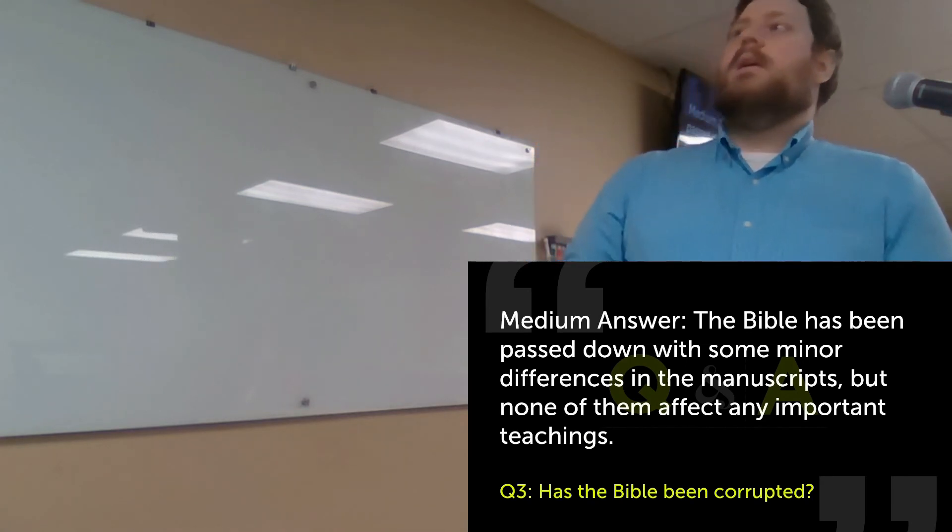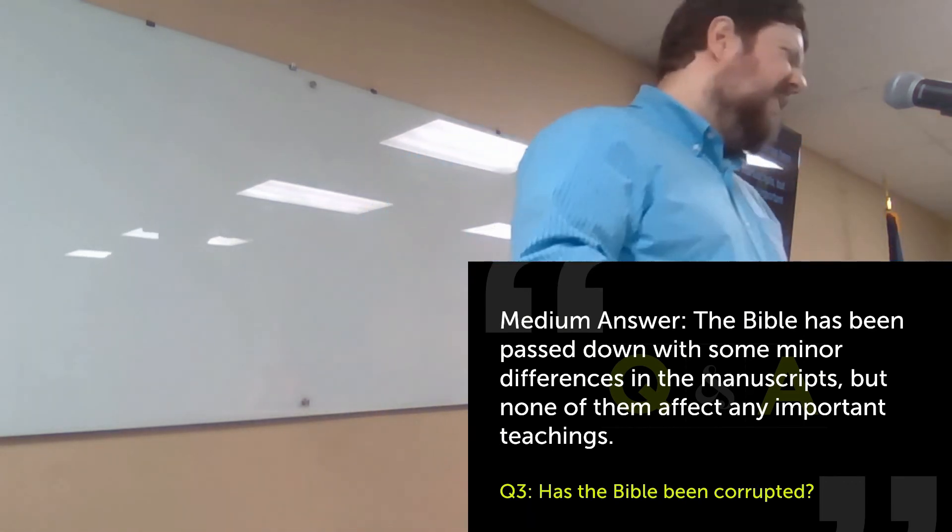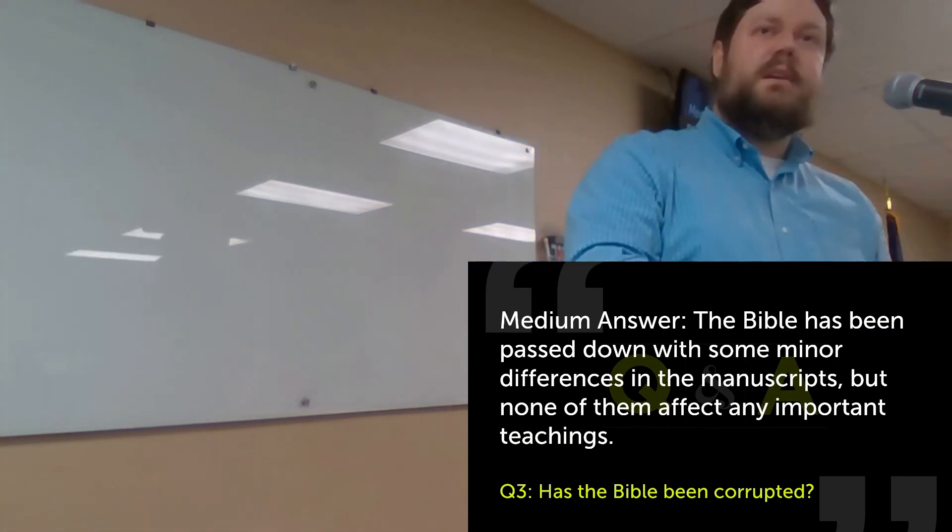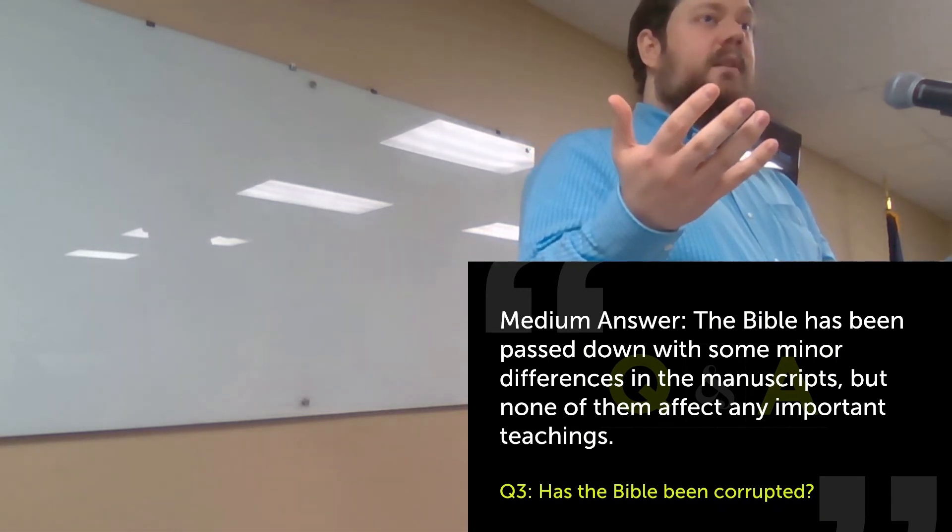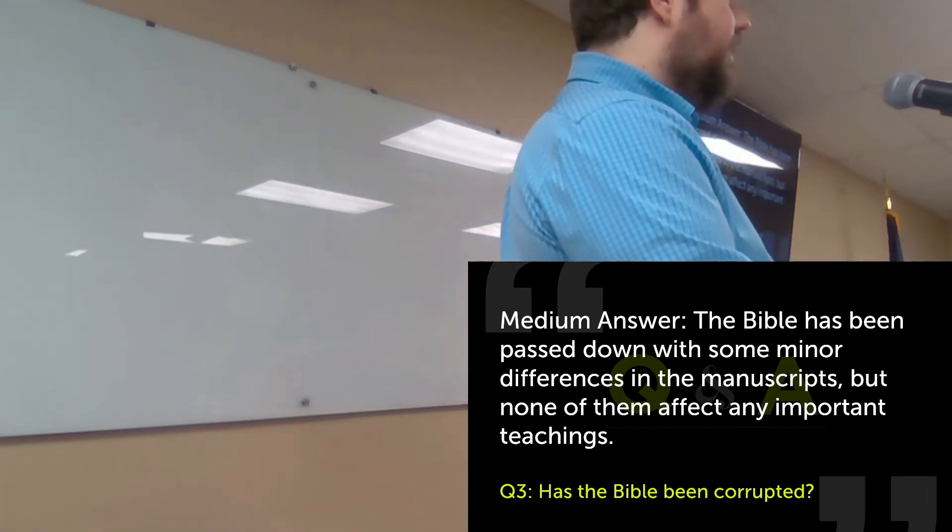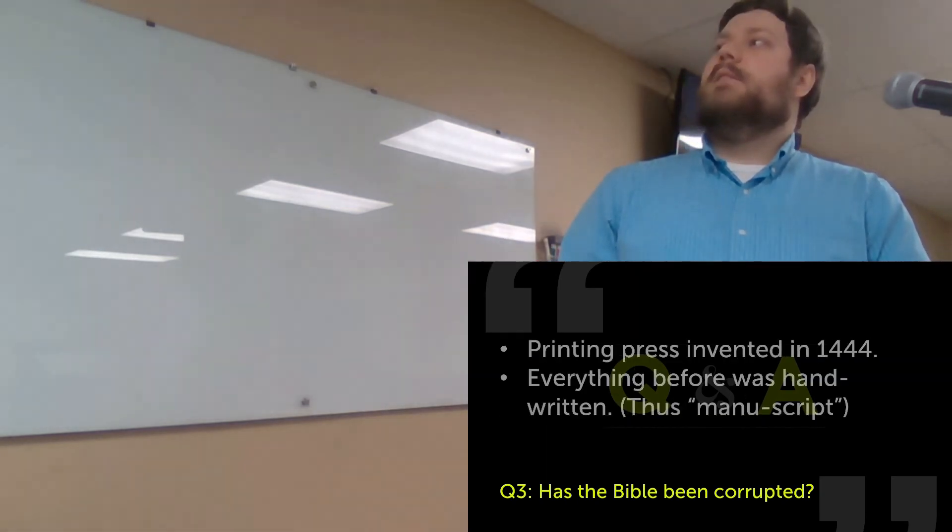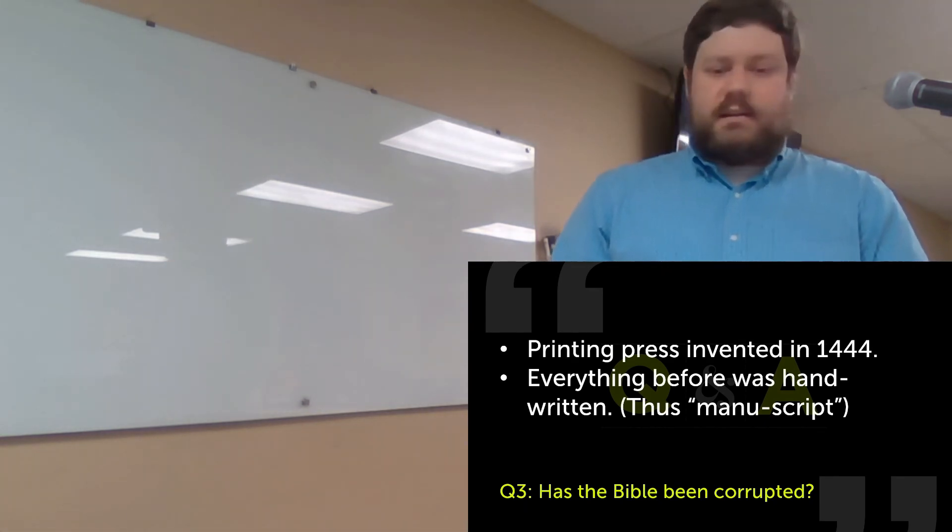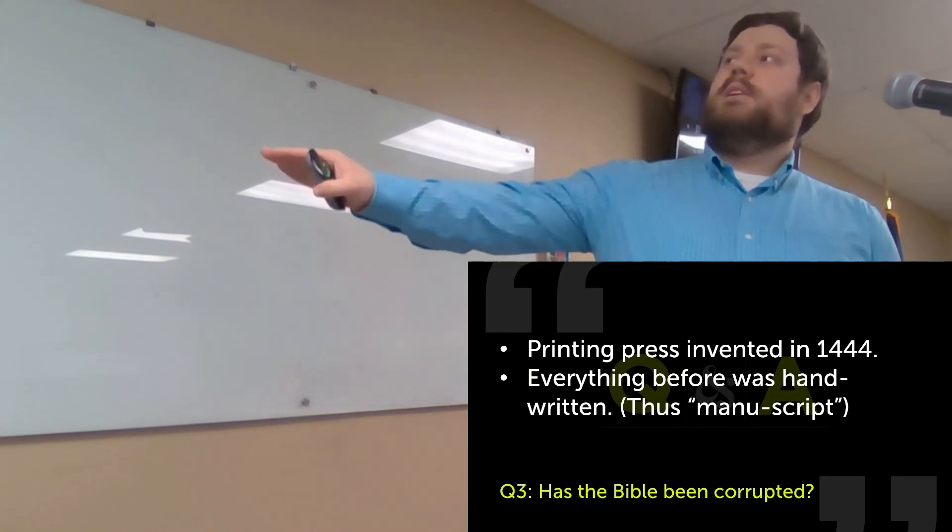Here's a medium answer. Are there variations in the text? Yes. The Bible has been passed down with some minor differences in the manuscripts throughout the centuries, but none of these differences affect anything important. None of them affect any important teachings. Why didn't God just make like one golden glowing copy of the Bible and just keep it perfectly preserved throughout the years? He didn't do that. When humans copy things, we introduce differences. In the manuscripts, we can see these differences, but we know about them. The printing press was invented in 1444. That gives us 1,400 years to transfer stuff before you have the printing press. Everything else was handwritten. That's what manuscript means, handwrite.